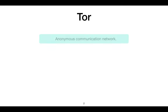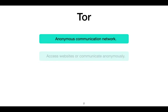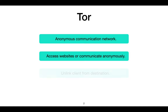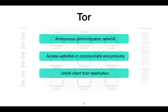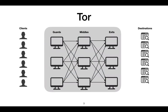Tor is an anonymous communication network allowing users to access websites or communicate anonymously. It does this by unlinking the client from its destination. In Tor, the route between a client and a destination consists of three hops. The route is selected by the client and begins via a randomly selected entry relay named a guard, then continues to a randomly chosen middle and exit relay before reaching its destination.